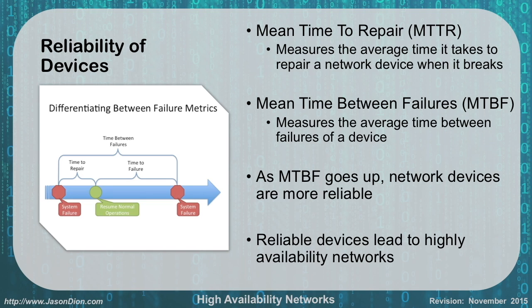Consumer grade electronics tend to fail a lot quicker than prosumer or professional grade. A little Linksys router at your house might fail every year or two, whereas a Cisco professional level router would be expected to run for three to five years without issues. You need to know how often parts are going to fail and how long it's going to take to get back up, because all of those things are going to cause problems.